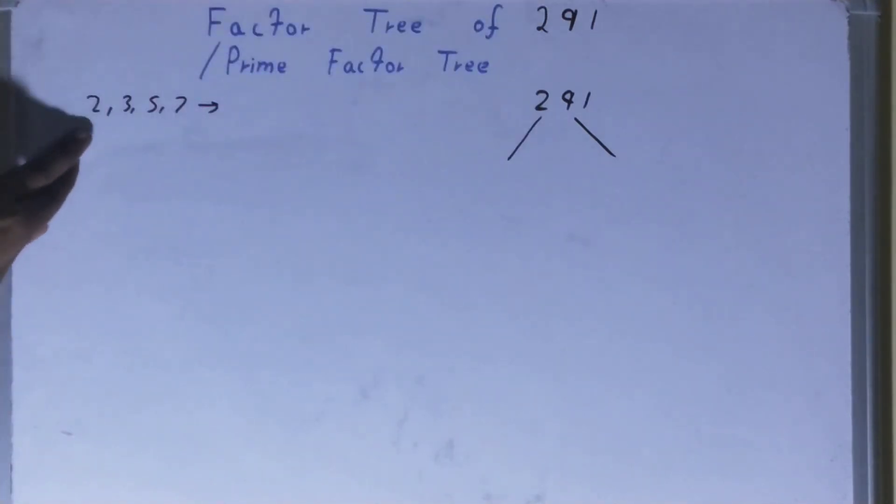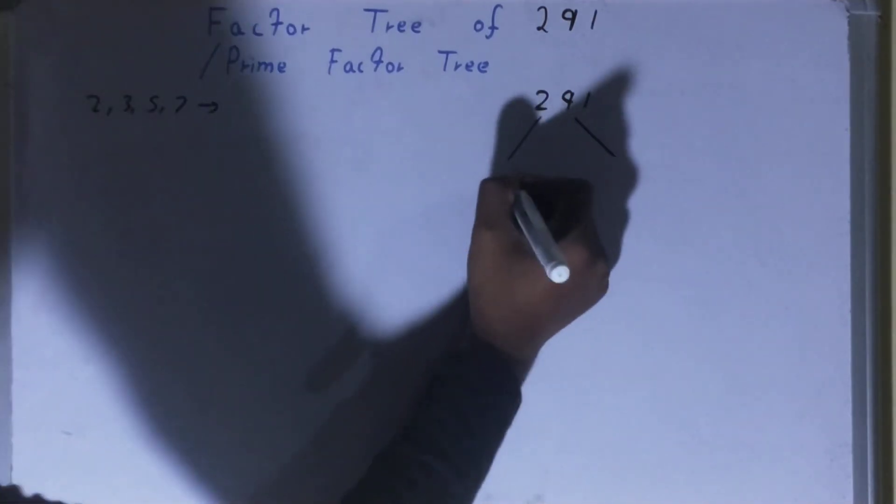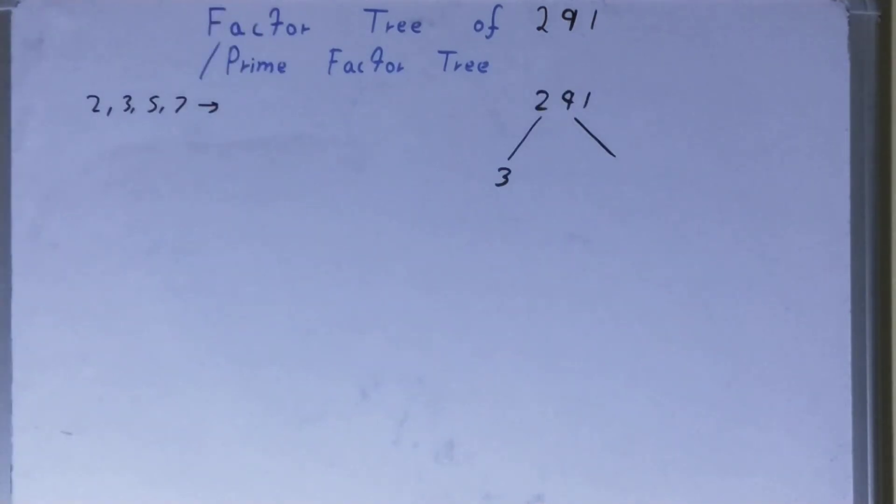this, we check: is the number 291 divisible by 2? No. Is it divisible by 3? Yes. So one of the numbers will be 3, the other will be whatever we get after dividing. So 291 divided by 3, what